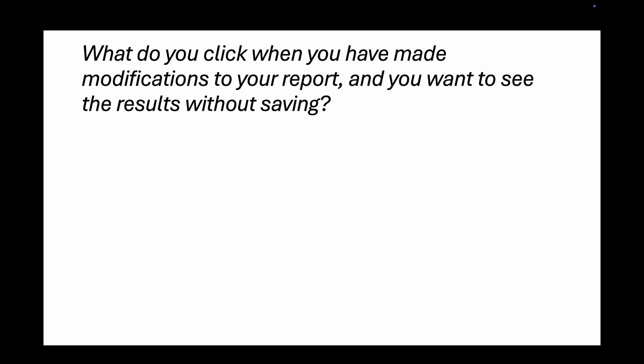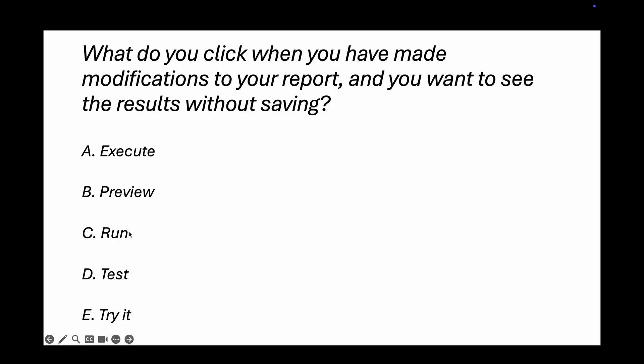Question 10: What do you click when you've made modifications to your report and want to see the results without saving? Options are execute, preview, run, test, and try it. We use the run button to see results without saving — if we don't like the output, we can adjust it and then save. The right answer is run. That's it for part 1 — 10 questions covered. See you in the next part with 10 more important CAD exam questions!